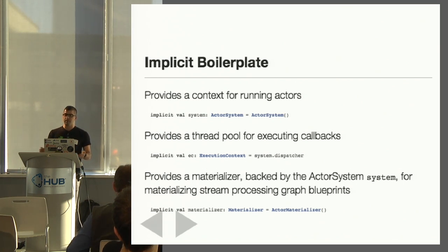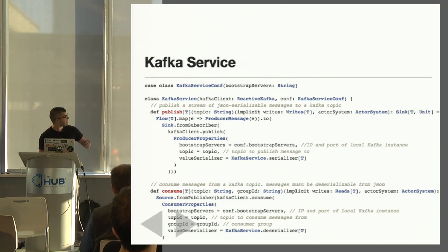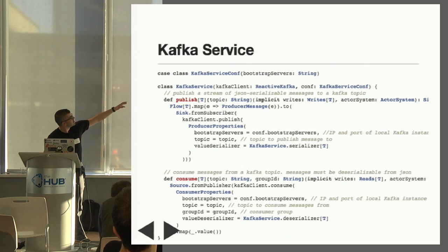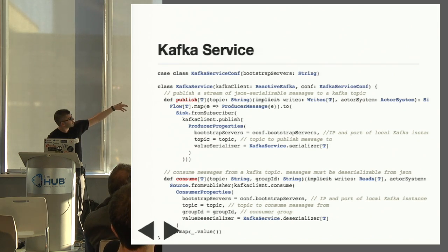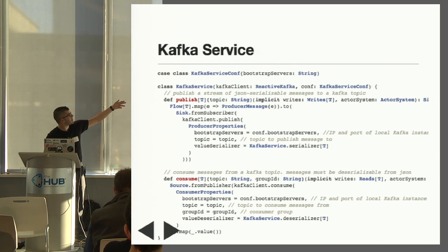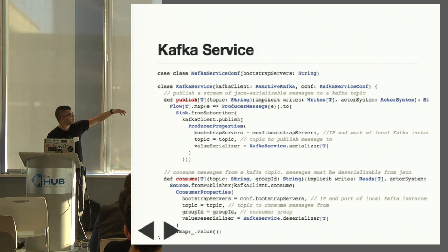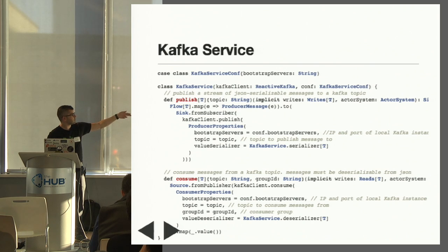So these will always be in scope. First, we're going to need some service to publish to Kafka — we need to publish the messages received via WebSocket to Kafka, and we're also going to want to look at Kafka and make sure the messages get there. The publish method creates a sink using the reactive Kafka library, abstracts over a lot of the producer properties, and wraps incoming messages in ProducerMessage, which holds various metadata, keys, etc. It can serialize anything that has an implicit Writes type class — that's used by Play JSON to say it knows how to turn an instance of type T into a JSON object. Vice versa, for consume, anything that can be read from JSON can be read from Kafka, with consumer properties, the topic, group ID, deserializer, etc.